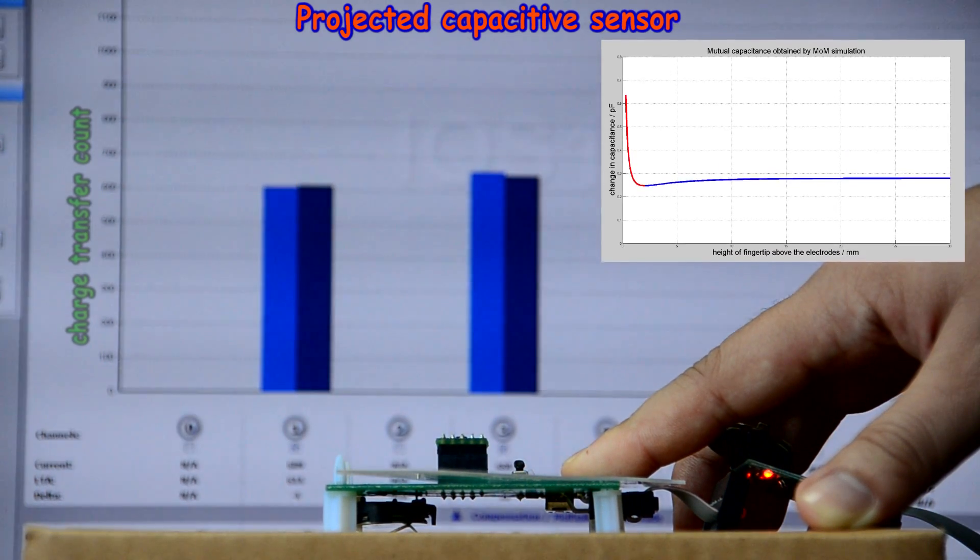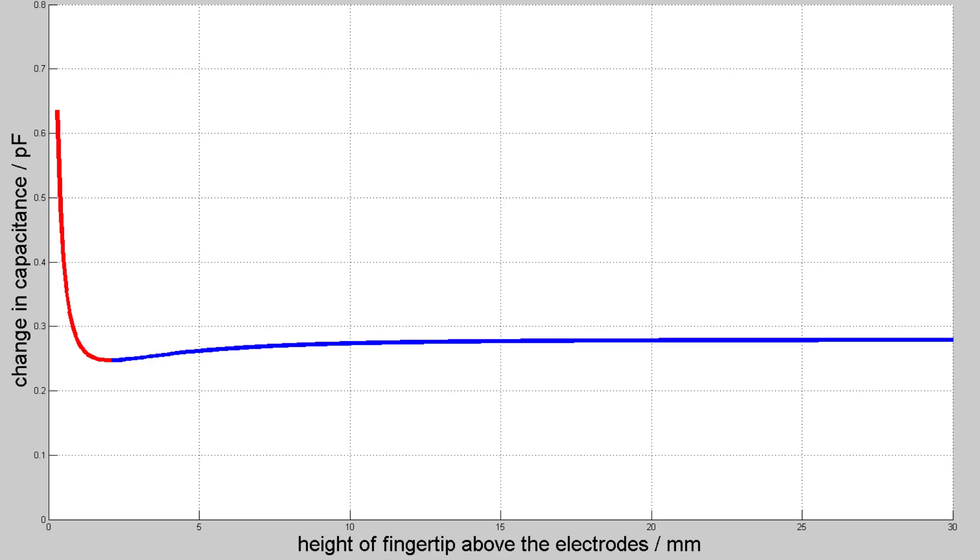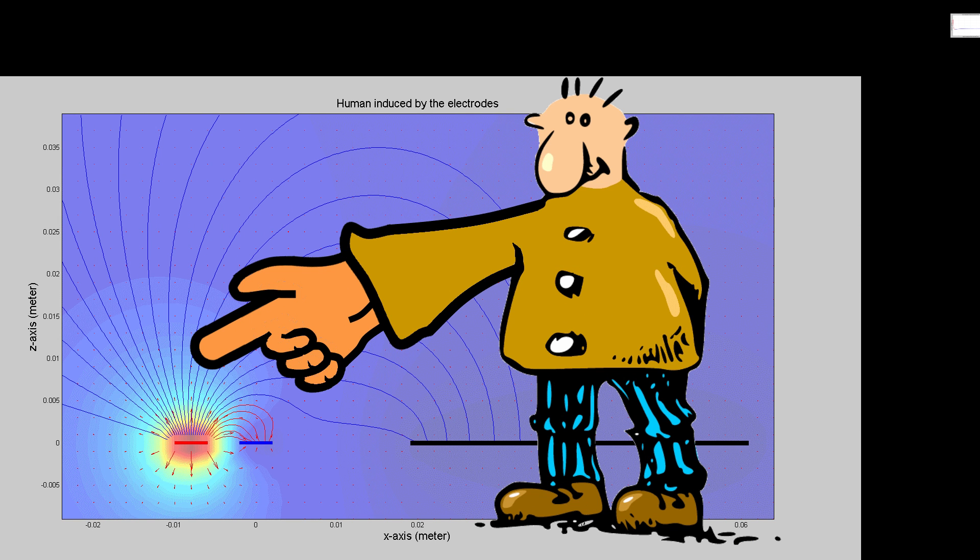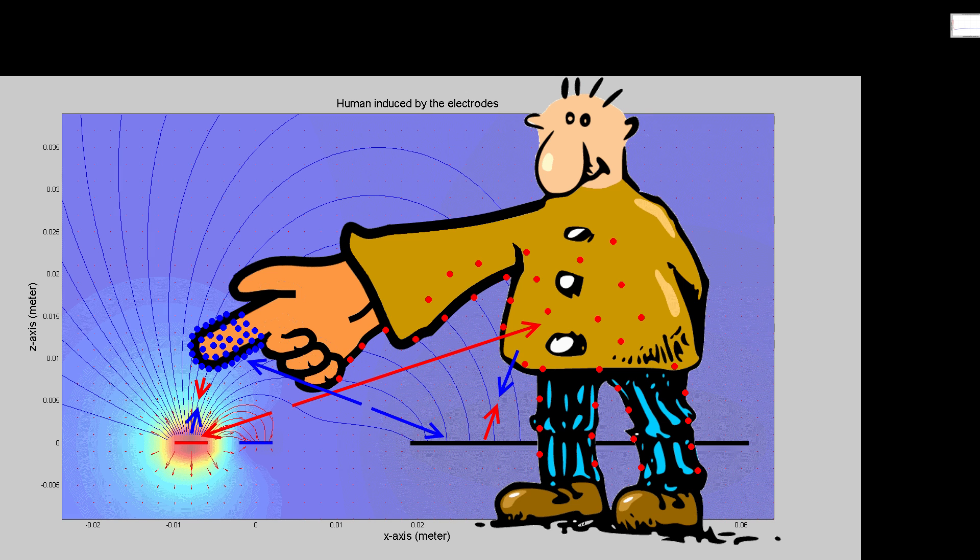So why does the capacitance not increase with the touch like in the self-capacitive sensor? Just like the self-capacitive sensor, the transmitter and the ground plane together induce the person's fingertip with negative charges, and the body with positive charges.